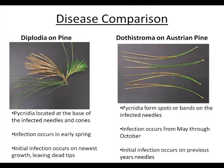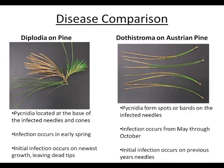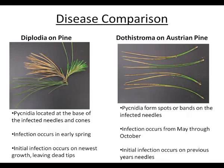In a disease comparison, it should be noted that these two diseases can infect the same pine species, with Dothiostroma having a narrower host range. Diplodia usually infects the newest growth and can kill tips, while Dothiostroma infects the previous year's needles and usually does not kill the entire needle during the first year. Also, Dothiostroma has a longer infection period, which is important to know for management.